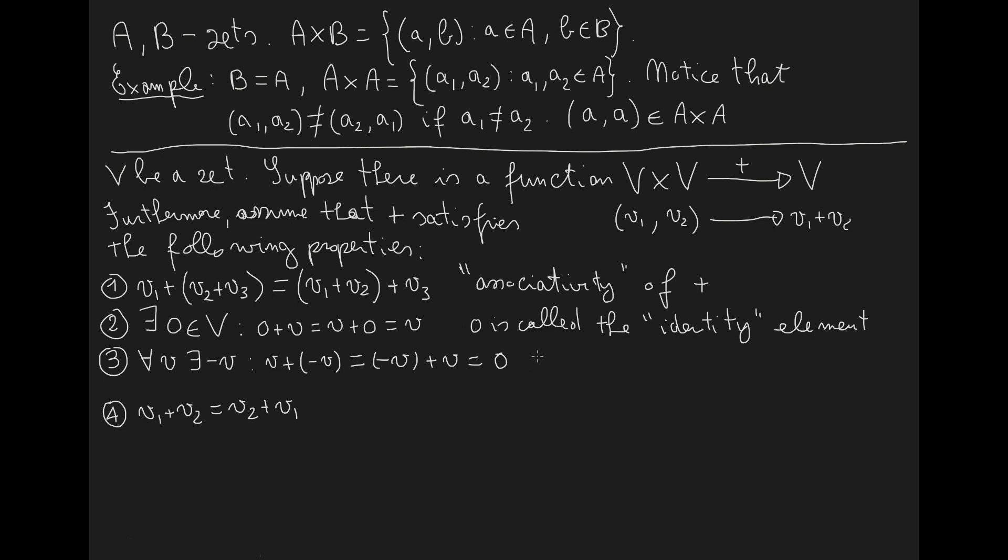The element negative V is called the opposite of V, and this property is called commutativity.